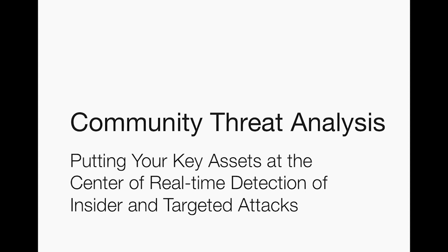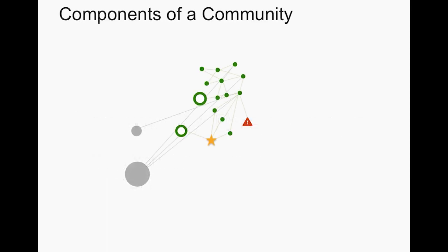So let's take a look at what this looks like in the Vectra user interface. First, we should probably talk about how Vectra sees communities in the first place. The X-Series platform is going to monitor your internal network traffic to build a logical map of all the hosts in your network, but the platform goes well beyond just building this basic map.